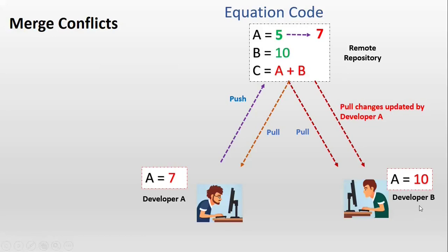When he tries to merge his local development branch with the local master branch, it leads to merge conflicts. Because Git is unable to understand which value it has to consider — whether it has to go with A equals to 7 or A equals to 10. So in this scenario developer B has to connect with developer A.